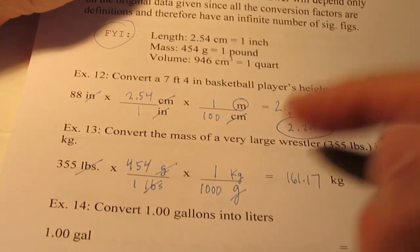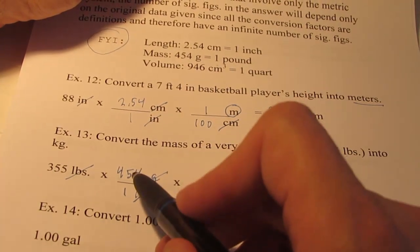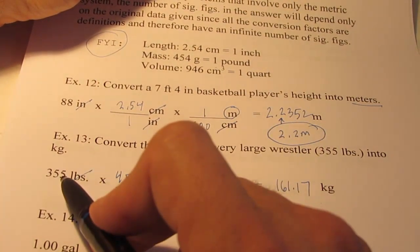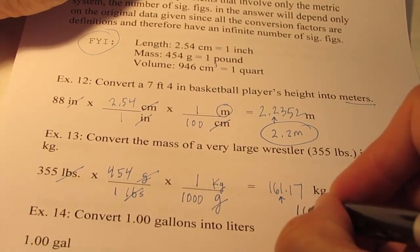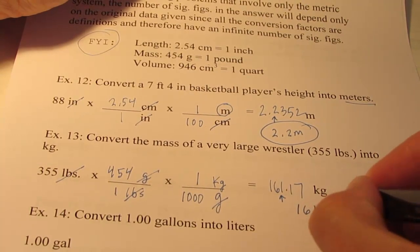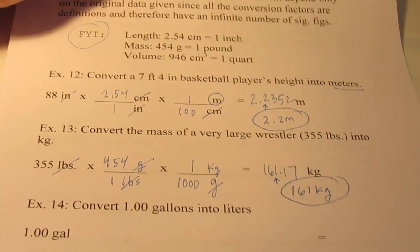355 times 454 divided by a thousand is 161.17. So let's see, I have infinite sig figs here, three here, three here. So I can have three in my answer. So this is 161 kilograms.